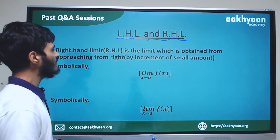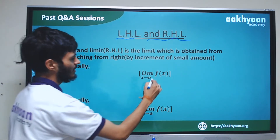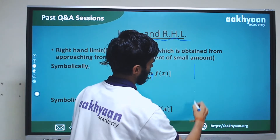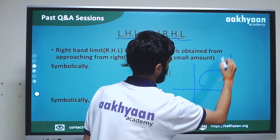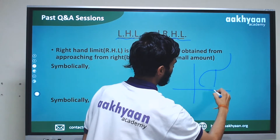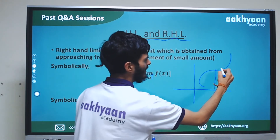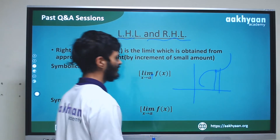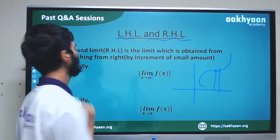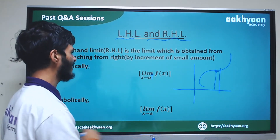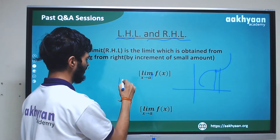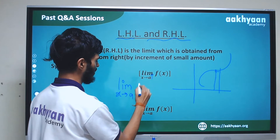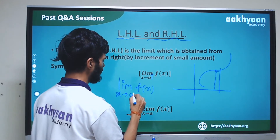So, if you have a function, you will have a limit at this point. If you approach from the right side, you will approach this point from the right. This is the right-hand limit. We will denote it mathematically as: limit x tends to a⁺ of f(x).